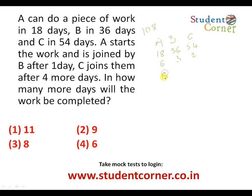A starts the work and is joined by B after one day. So for day one, only A works: 6 units. From day two, A and B work together (6+3 = 9 units per day) for four more days: 4×9 = 36 units. Total done so far: 6+36 = 42 units. Then C joins all three, doing 6+3+2 = 11 units per day.